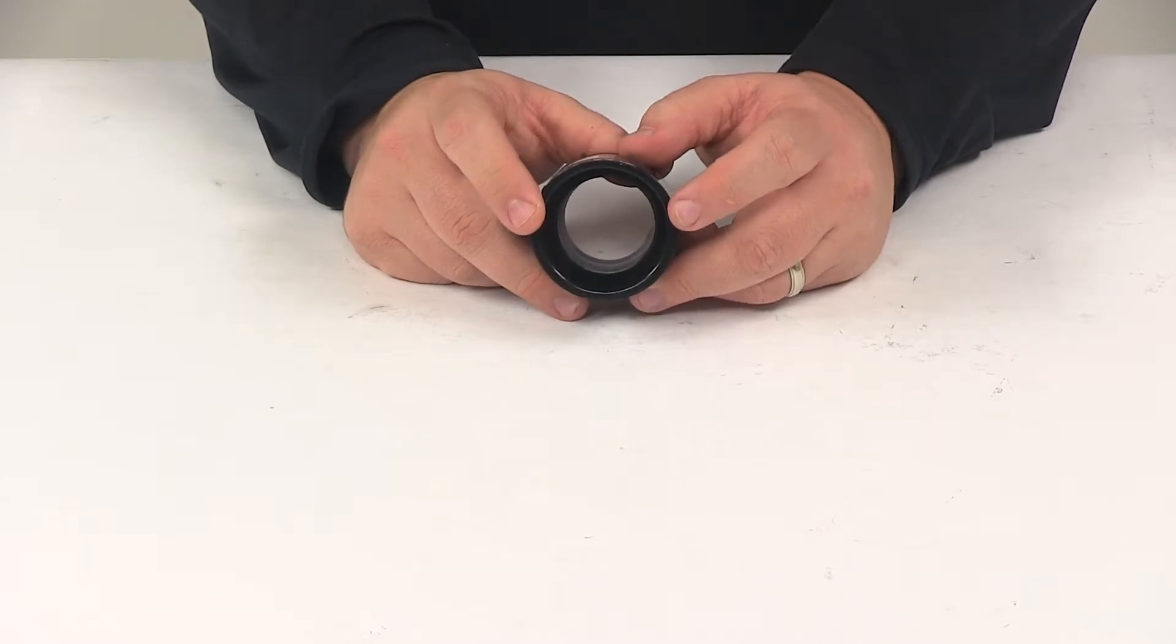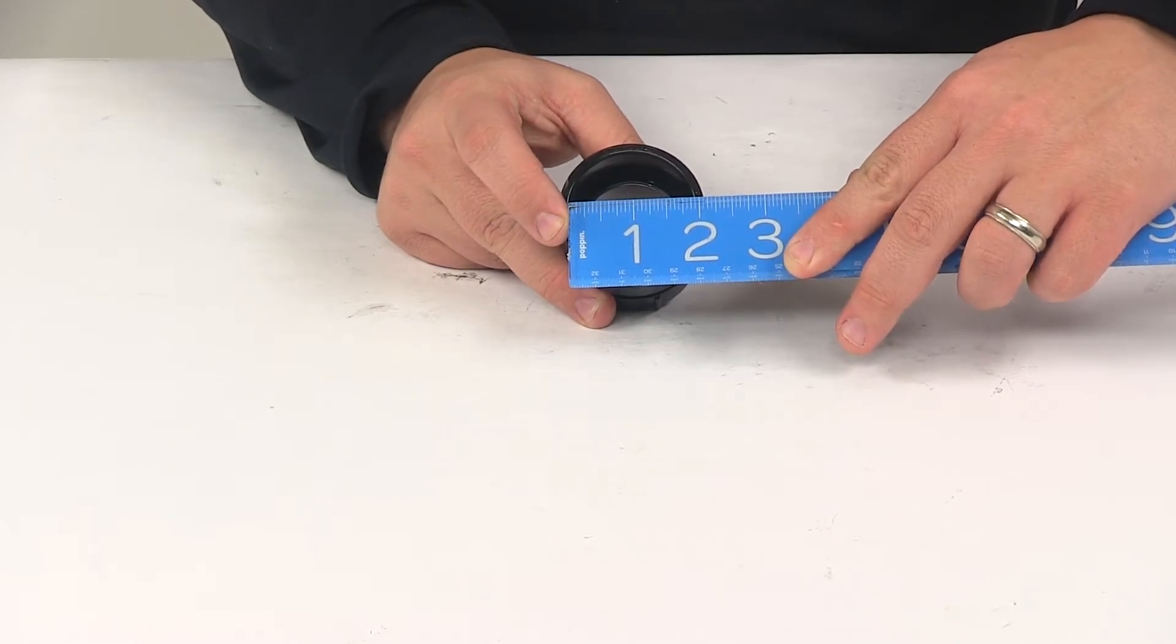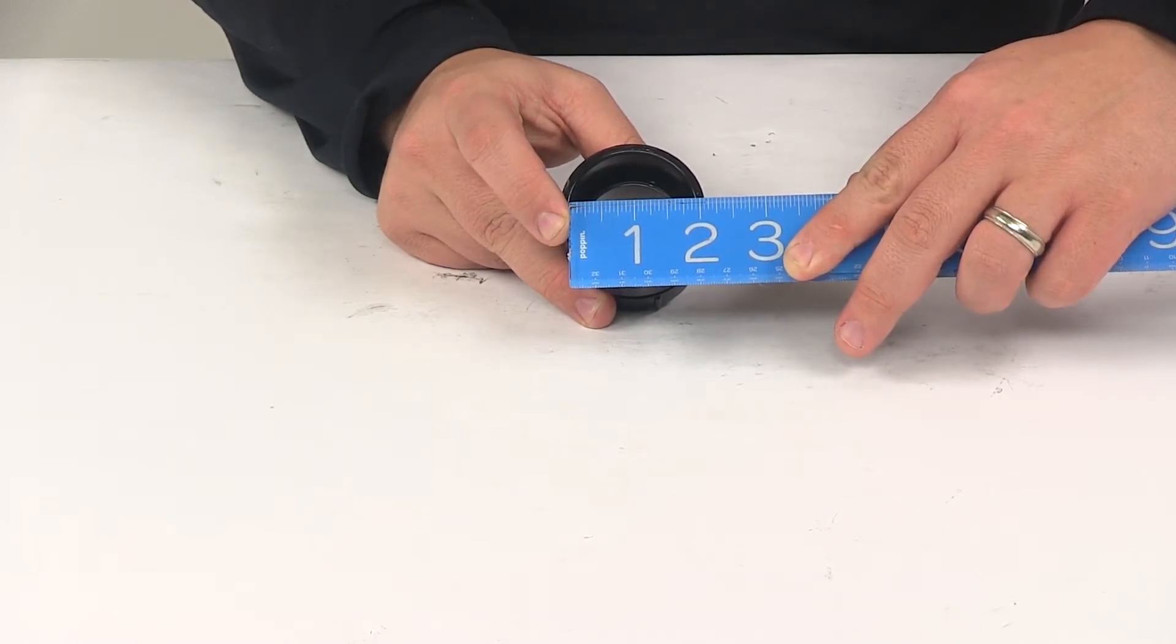On the other end of the fitting will be your hub, and you slide your other pipe into this end. That's going to give us an inner diameter measurement of about one and fifteen sixteenths of an inch, one and seven eighths, right in that area.